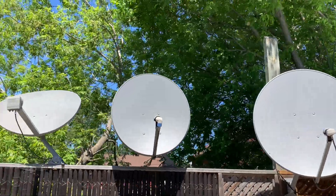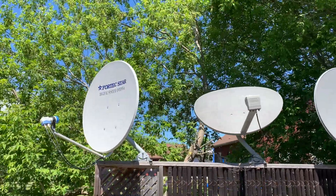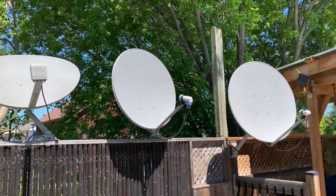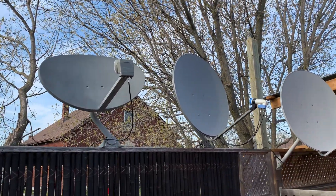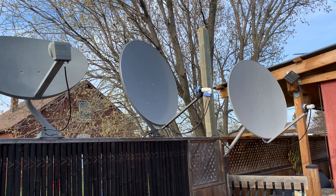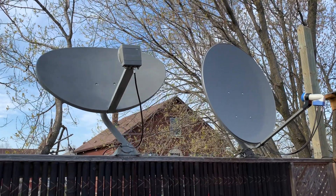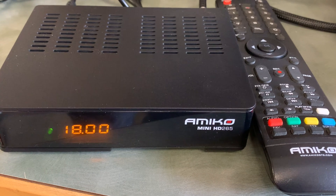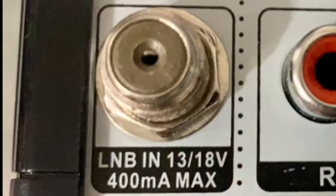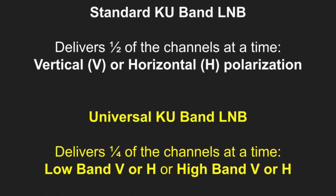The next situation the universal LNB has to handle is switching between polarities. All free satellite TV channels in North America are linearly polarized, meaning the signal wavelengths are oriented either in a vertical or horizontal line, but the receiver can only decode one polarity at a time. To switch between vertical and horizontal polarities, the receiver uses a 13-volt and 18-volt switching system. This polarity switch mode is used by both the standard and the universal KU-band LNBs. A standard KU-band LNB splits signals into horizontal or vertical polarized channels, but the universal LNB manages the entire KU-band spectrum, splitting signals into low band and high band as well as vertical and horizontal.